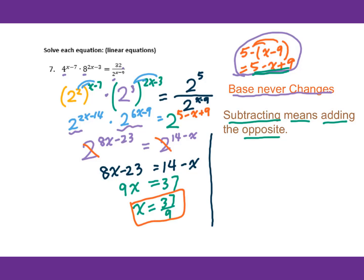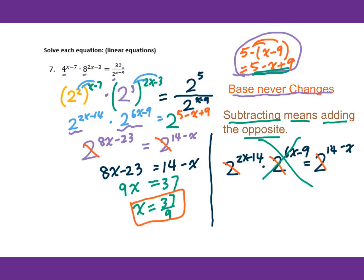A common mistake is applying the base cancellation incorrectly — like canceling the base on each factor separately before combining. Make sure you have the format b to the x equals b to the y, then cancel the base to get x equal to y. Only use this pattern.